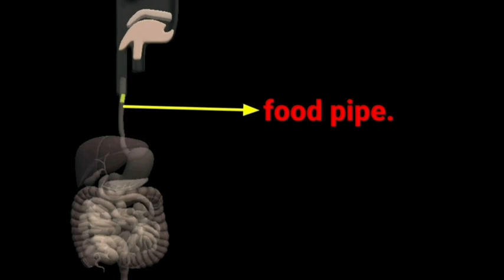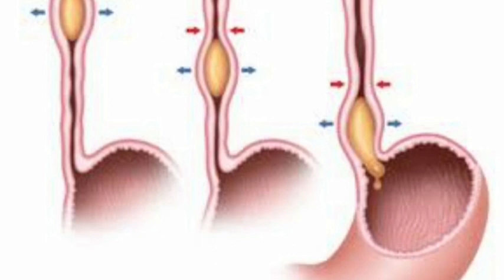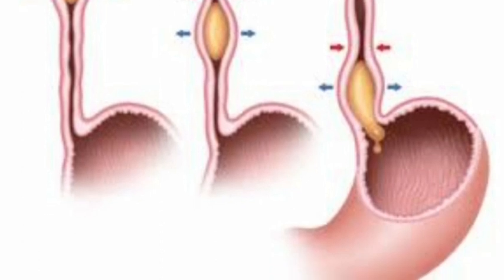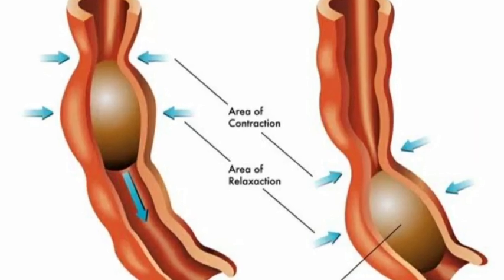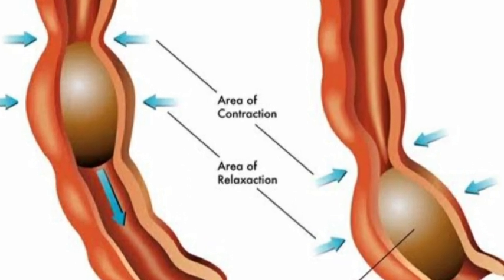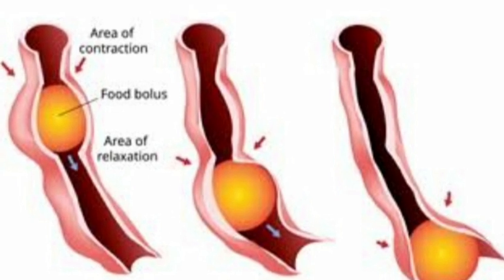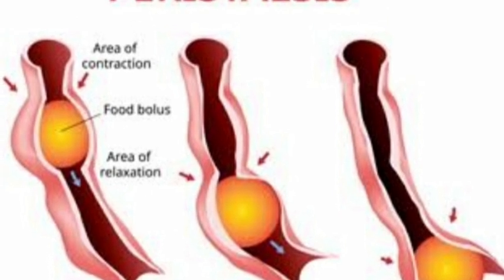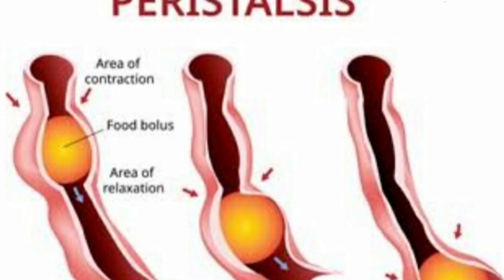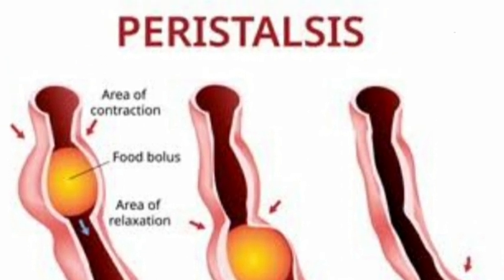This partially digested food is swallowed by the tongue and passed down to the esophagus or food pipe. The food pipe or esophagus is a tubular structure which connects the mouth to the stomach. It carries slightly digested food from the mouth to the stomach. Food is pushed downward by a wave-like movement of the wall of the food pipe as a result of alternate contraction and relaxation. This movement is called peristalsis.